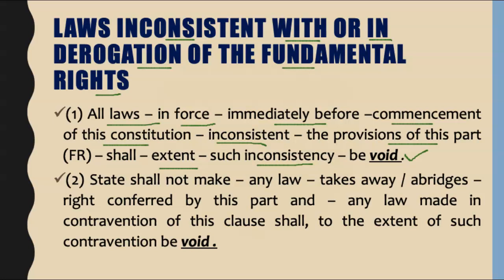Now let's move on to clause 2. Clause 2 says the state shall not make any law which takes away or abridges the rights conferred by this part, and any law made in contravention of this clause shall to the extent of such contravention be void. So the state cannot make any law which abridges or is against fundamental rights.